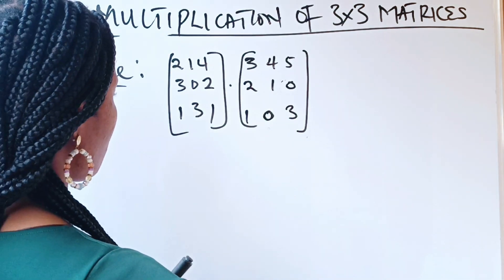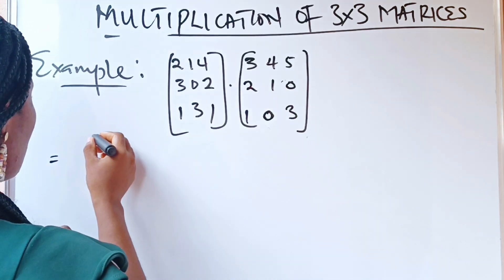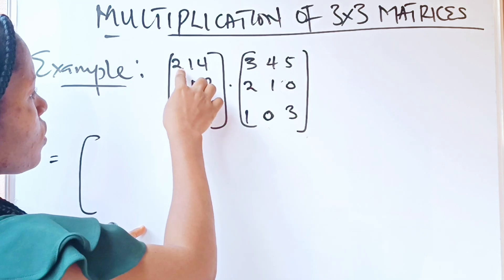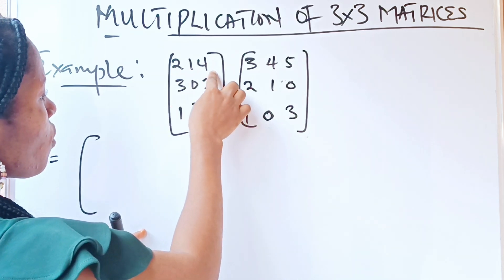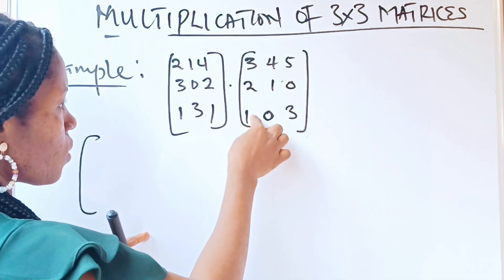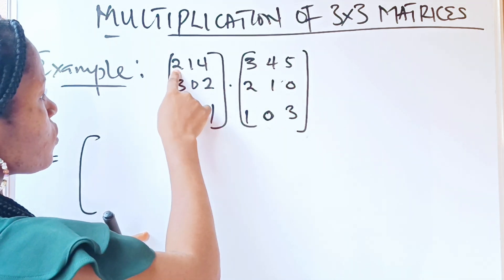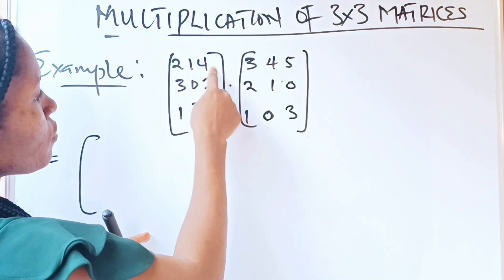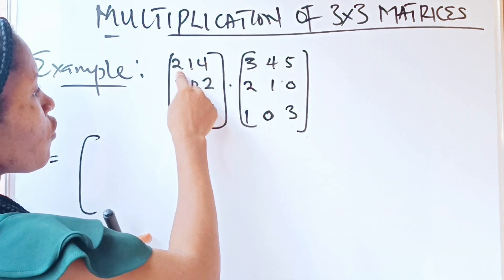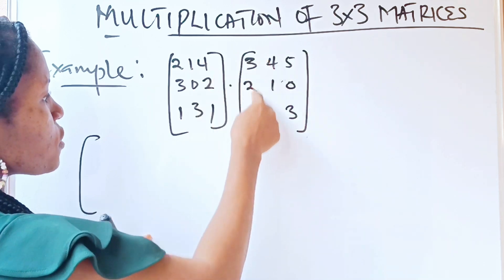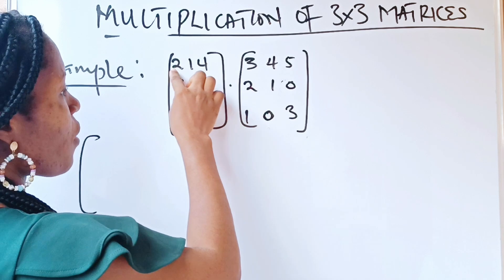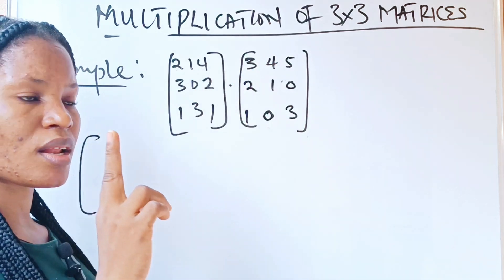Now let us go ahead and solve this. Whenever you multiply one row by one column, you form just a single number. So this will be written as follows — this first row, which is 2, 1, 4, is going to multiply the first column, 3, 2, 1. The first will multiply the first, second will multiply the second, third will multiply the third, and because we are forming a single number, we add them together.